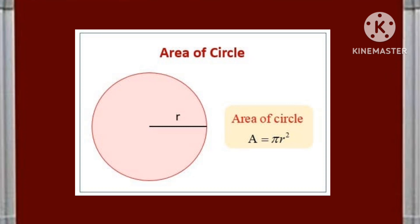The formula of area of a circle will be pi r square and the value of pi will be same 22 by 7 or 3.14 approximately. Now I am going to show you how to solve some important numerical problems regarding area of a circle.